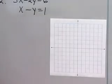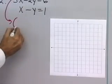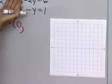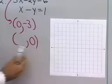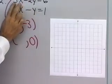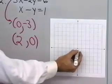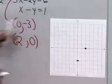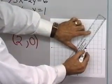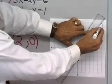Let's try another one. Here I have 3x minus 2y is equal to 6. Let's find some ordered pairs that satisfy this equation. When x is equal to 0, I have negative 2y is equal to 6, so y must equal negative 3. If I let y be equal to 0, I have 3x is equal to 6, so x is equal to 2. I'll graph these two points: x is 0, y is negative 3, and x is 2, y is 0. Draw a line between them — it looks about like that.